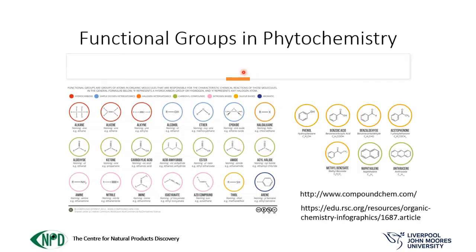There are many more functional groups in phytochemistry and in organic chemistry, and there is an extraordinary, visually engaging way to learn them. If you go to www.compoundchem.com or to the page from the Royal Society of Chemistry, you'll find the same infographics freely available to all students to download — really beautiful and engaging posters that you could print in color to facilitate your learning.